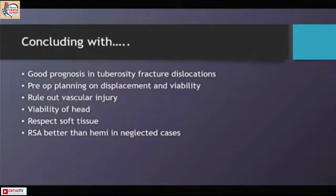In conclusion, tuberosity fracture dislocations tend to have a good prognosis. Perform proper preoperative planning on viability of the head, displacement, and combination in the tuberosities to achieve good osteosynthesis. In neglected injuries, be careful with vascular injuries, assess vascularity well, be gentle in retrieving the head, and do not touch the medial or posteromedial soft tissue structures. As long as the medial hinge remains undisturbed, your osteosynthesis tends to work well.